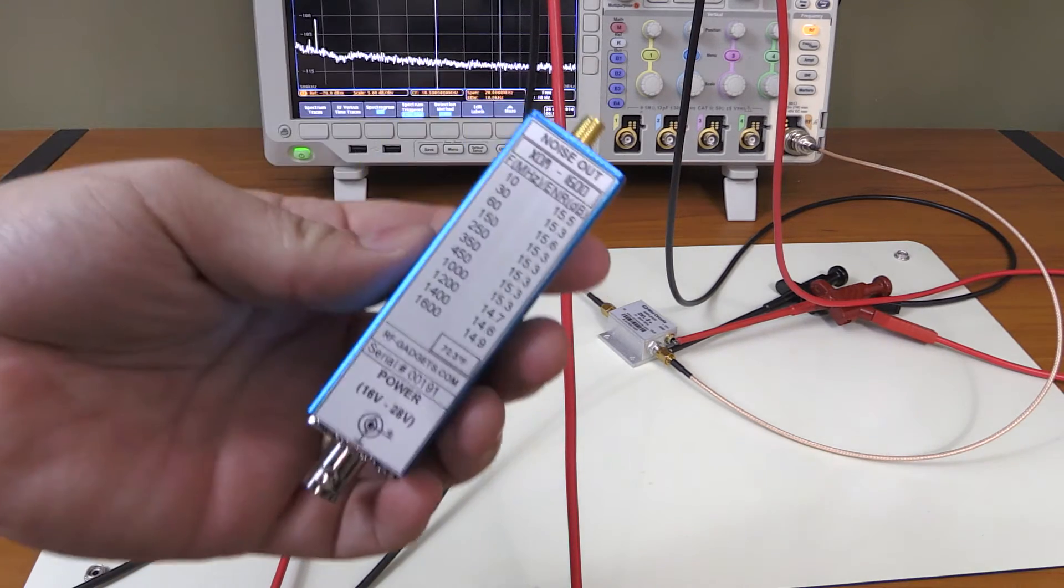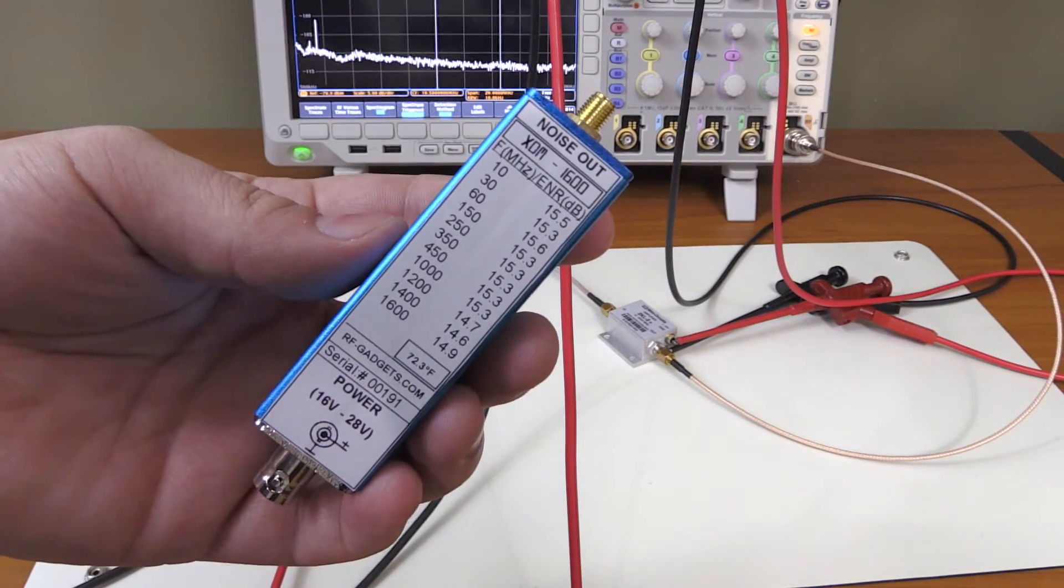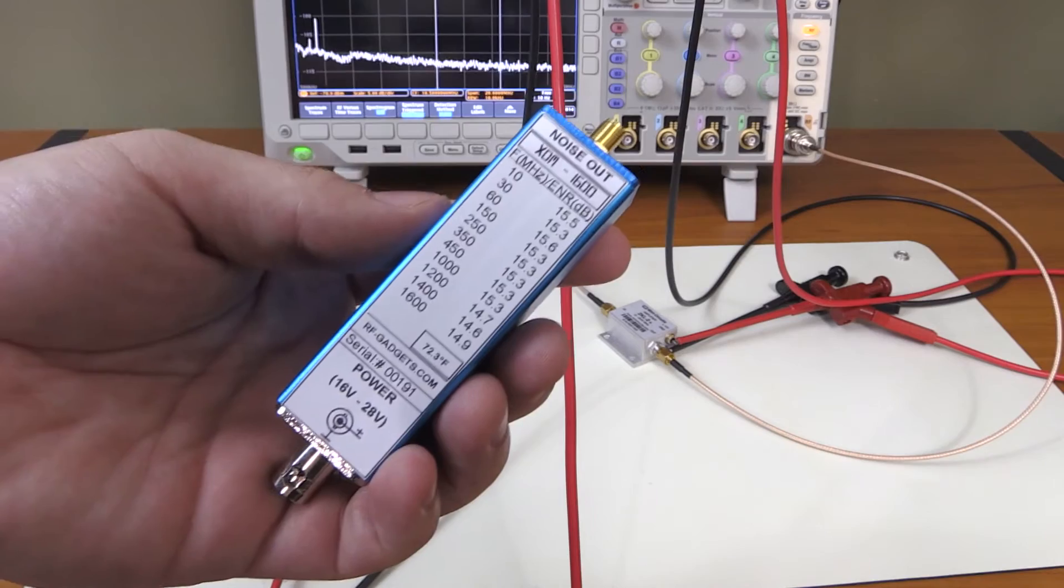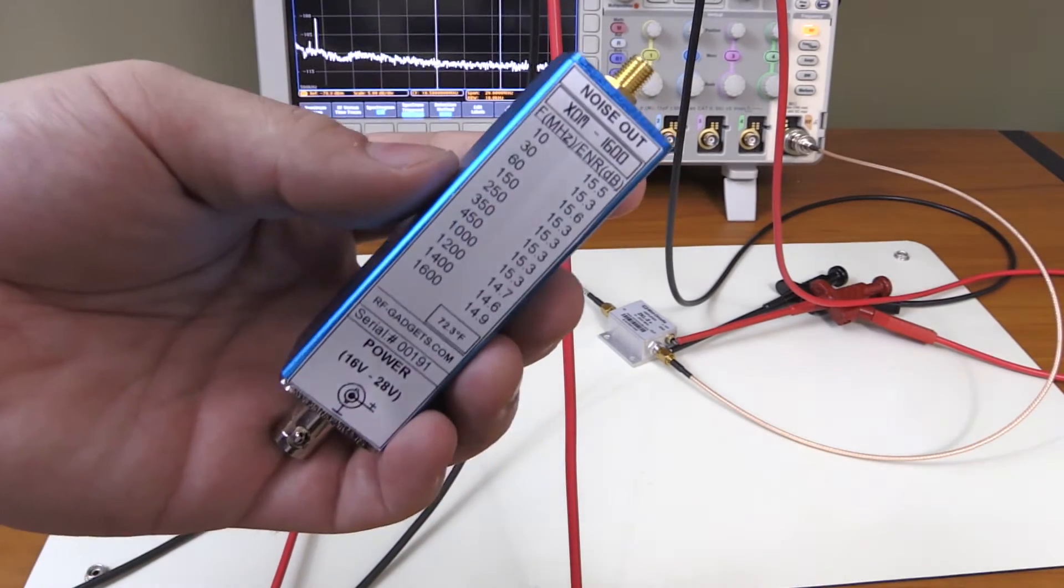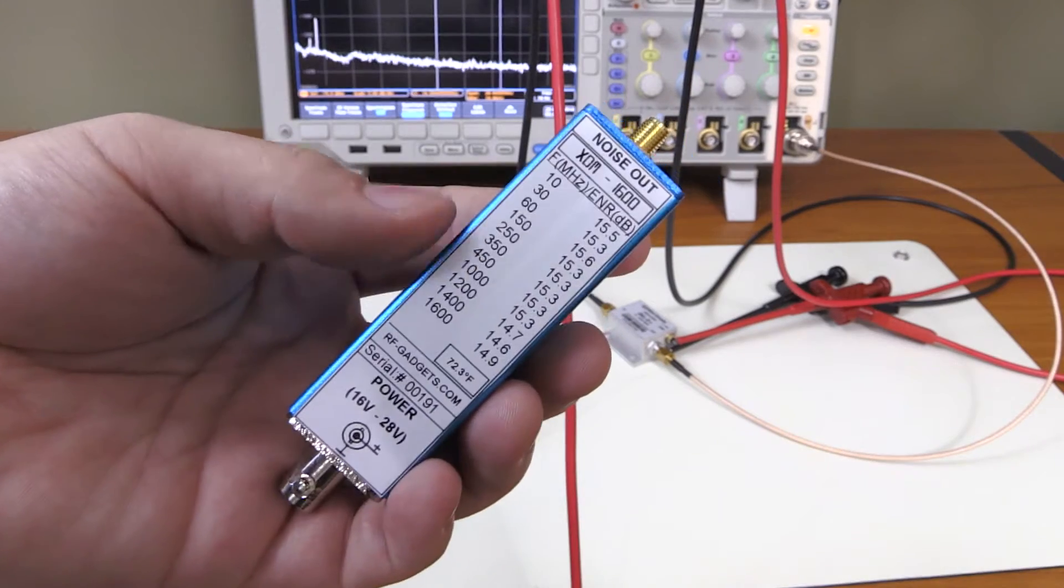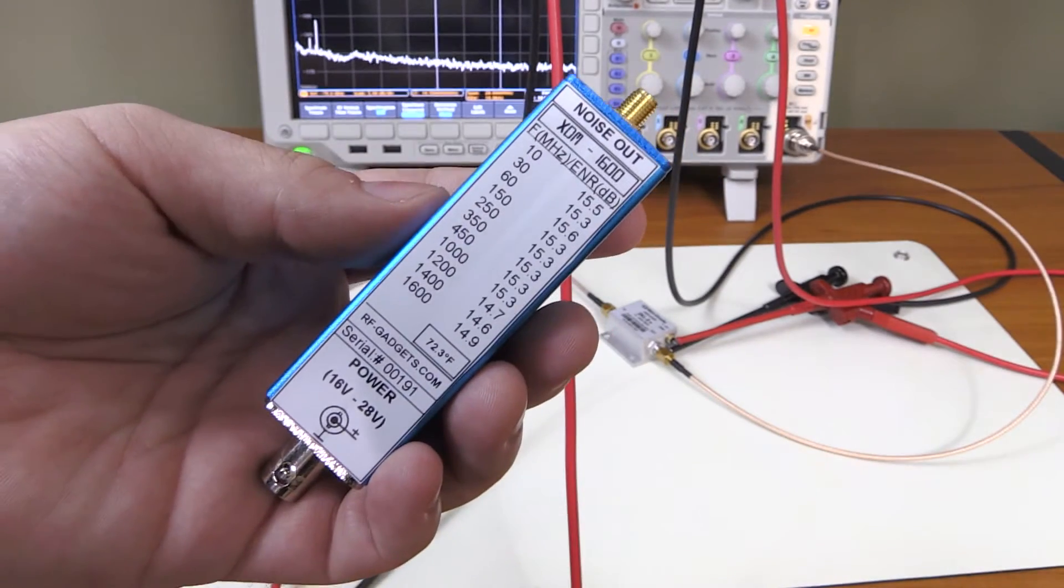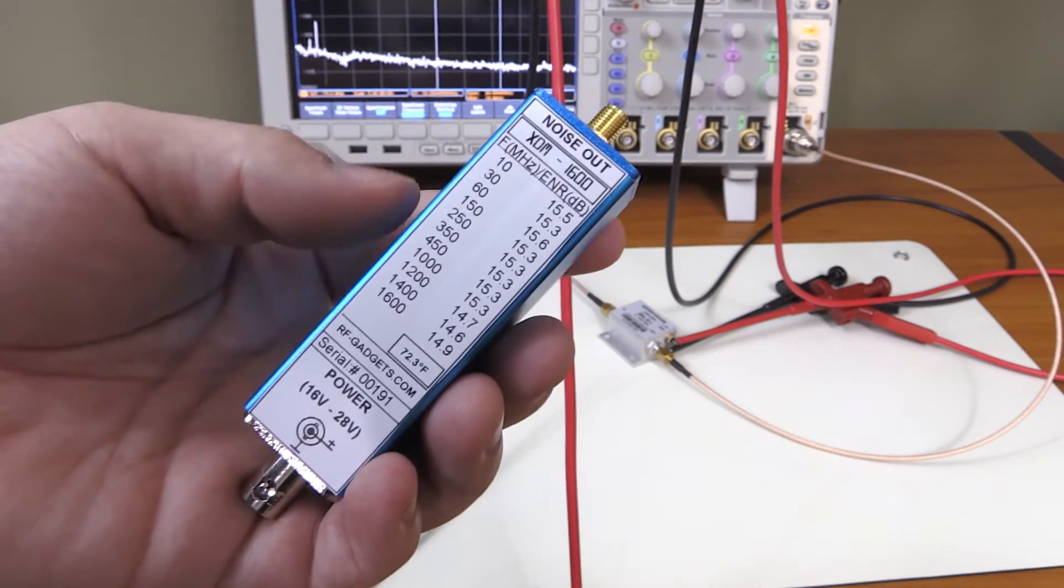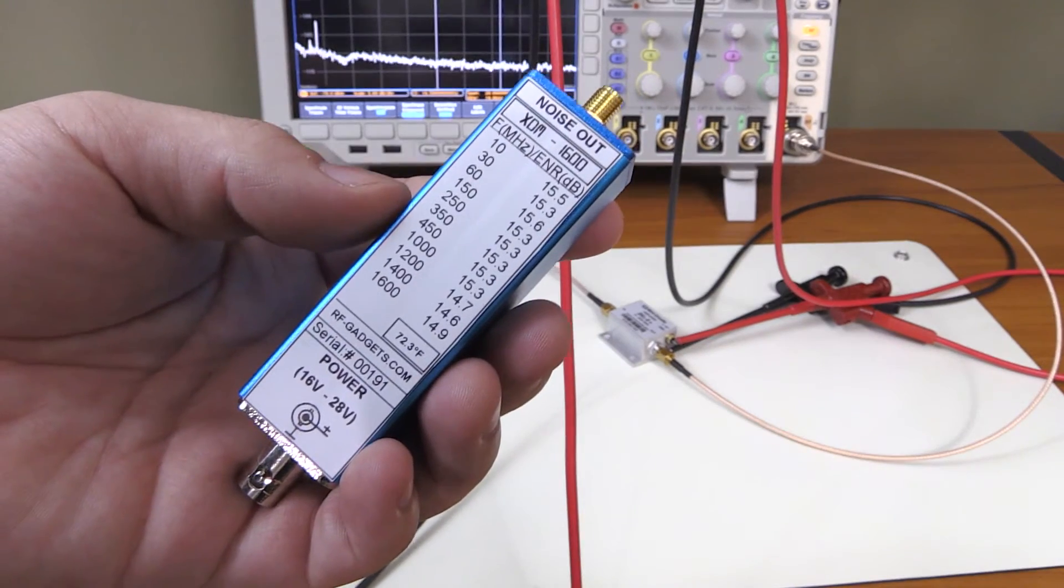And I got a noise source right here. This is a fairly typical noise source. It's an inexpensive noise source you can get on eBay. It's a little bit over a hundred bucks, but you can get some pretty good noise sources from Agilent, for instance, used on eBay too, but you're going to have to pay big bucks for it.